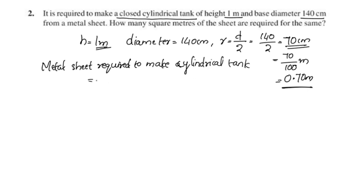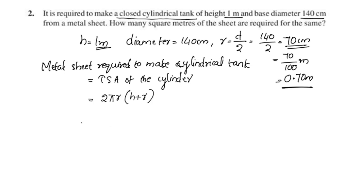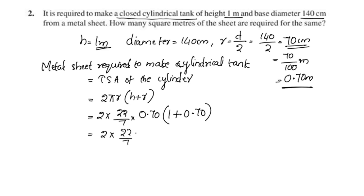Total surface area of the cylinder equals 2πr(h + r). Applying values: 2 into 22 by 7 into r, where r equals 0.70 and h equals 1. So TSA equals 2 into 22 by 7 into 0.70 into (1 plus 0.70), which is 2 into 22 by 7 into 0.70 into 1.70.